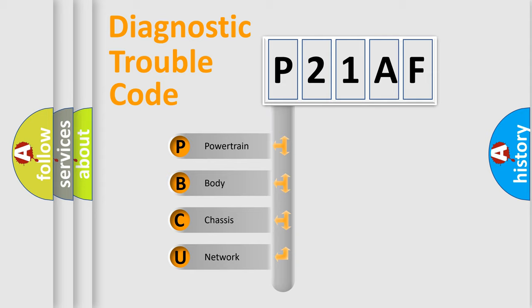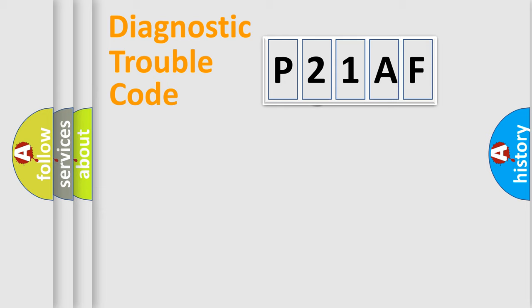We divide the electric system of automobiles into four basic units: Powertrain, Body, Chassis, and Network. This distribution is defined in the first character code.